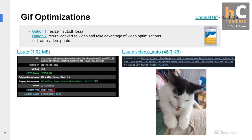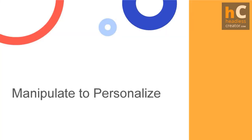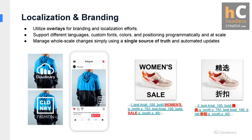Next we'll talk about media manipulation for personalization. This depends on what industry you're in and the purpose of your site — what types of effects do you want on media to match the desired experience for users? We'll look at ways to overlay text on images or videos, add different videos together, and cover topics that show how to personalize your specific site.